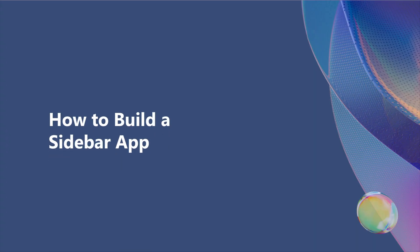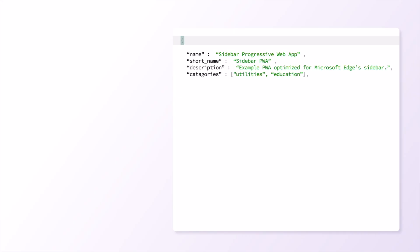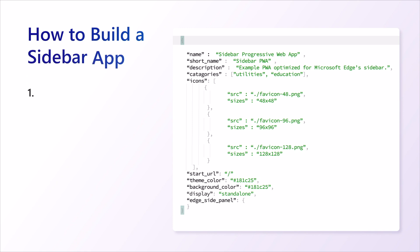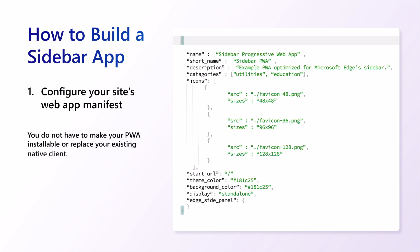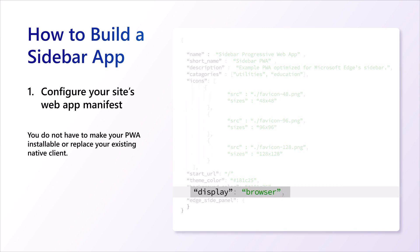Let's take a look at how to build a sidebar app. First, you'll need to configure your site's web app manifest, which is a JSON file hosted on your server with information about your app's appearance and capabilities. Adding this manifest, by the way, doesn't necessarily mean that your site is going to be installable as a native mobile or desktop app. If you wish to target only the sidebar, simply set the display member to browser.